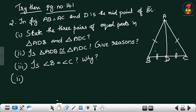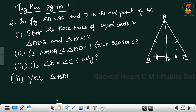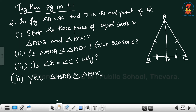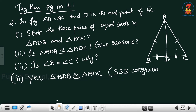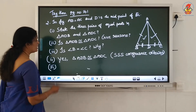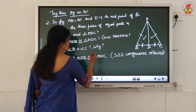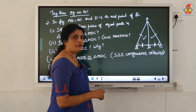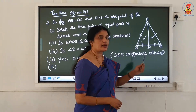Second answer: is triangle ADB congruent to triangle ADC? Yes. Triangle ADB congruent to triangle ADC. What is the reason? SSS congruence criterion. By SSS congruence criterion, we can write that these 2 triangles are congruent. Third question: is angle B equal to angle C? Why? Here we already proved that these 2 triangles are congruent.